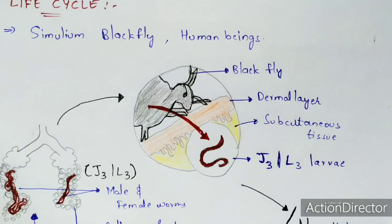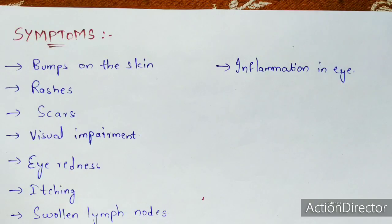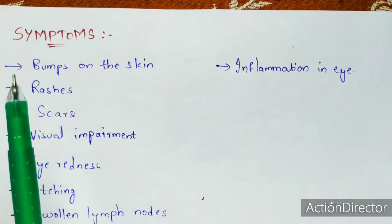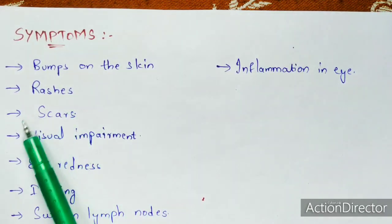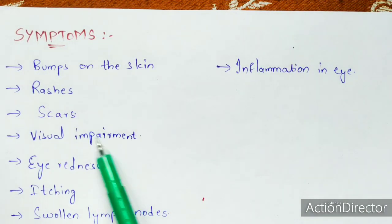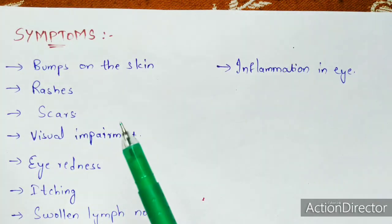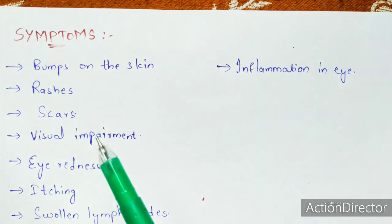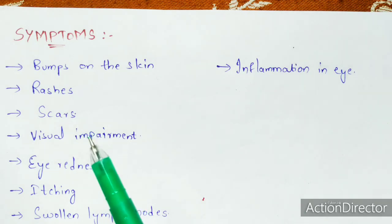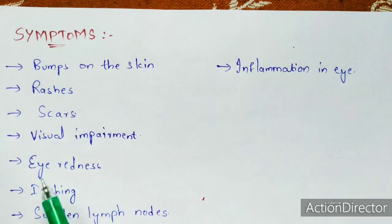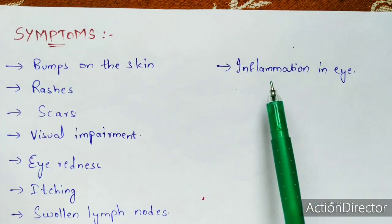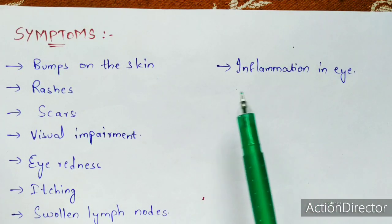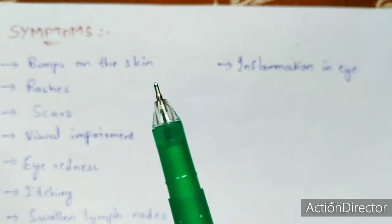The symptoms seen in a person infected with onchocerciasis include bumps on the skin, rashes, scars, visual impairment, eye redness, itching, swollen lymph nodes, and inflammation in the eye.